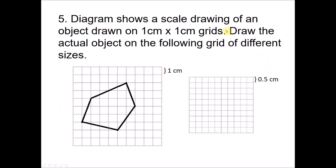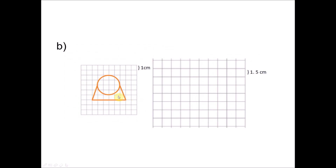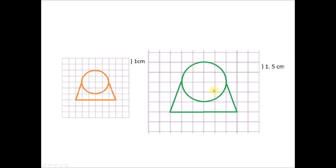Question 5: The diagram shows a scale drawing on a 1×1 grid. Draw the actual object on grids of different sizes. Since it is a different grid size, just draw based on the given scale drawing. Start with the base: 6 units. Draw the two sides. For the circle, if the center is marked, the radius is 2 units. The result is a shape with a base of 6 units and a semicircle of radius 2 units.